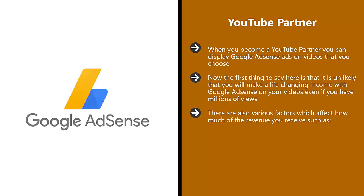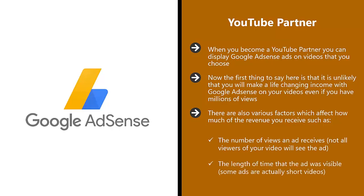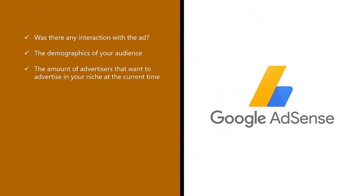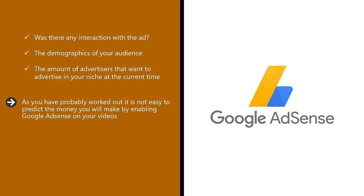There are various factors which affect how much revenue you receive, such as: the number of views an ad receives — not all viewers of your video will see the ad; the length of time the ad was visible — some ads are actually short videos; whether there was any interaction with the ad; the demographics of your audience; and the number of advertisers wanting to advertise in your niche at the current time. You don't have to worry about these factors other than trying to get as many views to your video as possible.